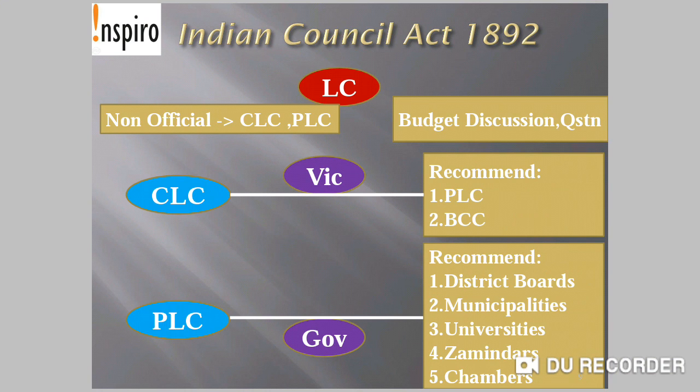Indian Council Act of 1892: Non-official members were now allowed in the Central Legislative Council and Provincial Legislative Councils, and their numbers increased. However, the official members' majority was retained in both the Central and Provincial Legislative Councils. These Legislative Councils now got more powers — the power to discuss the budget and to ask questions and supplementary questions to the executive.